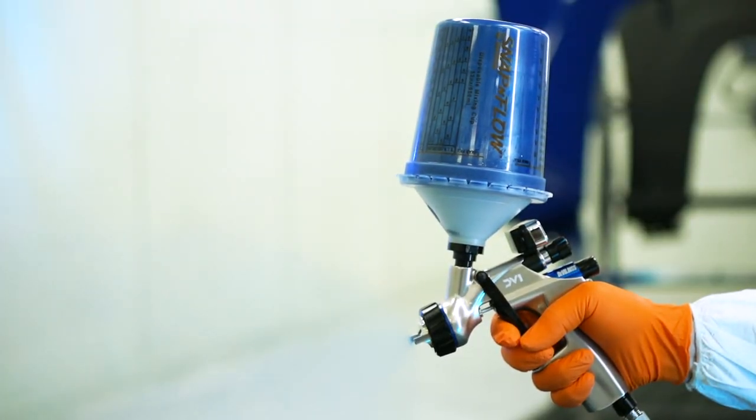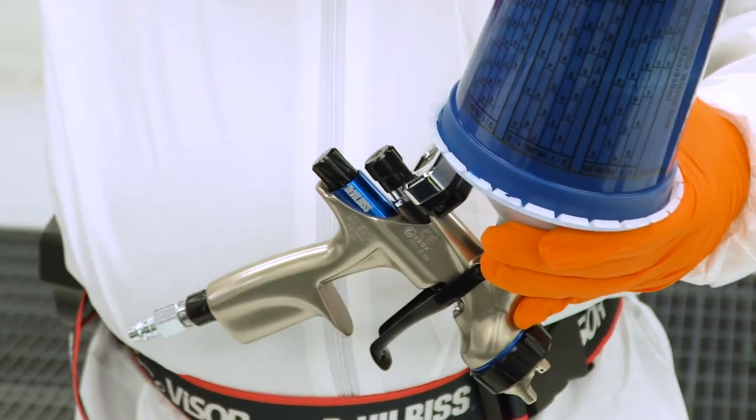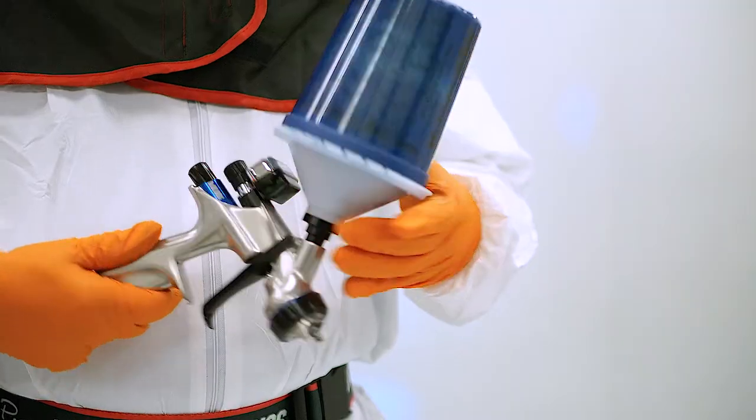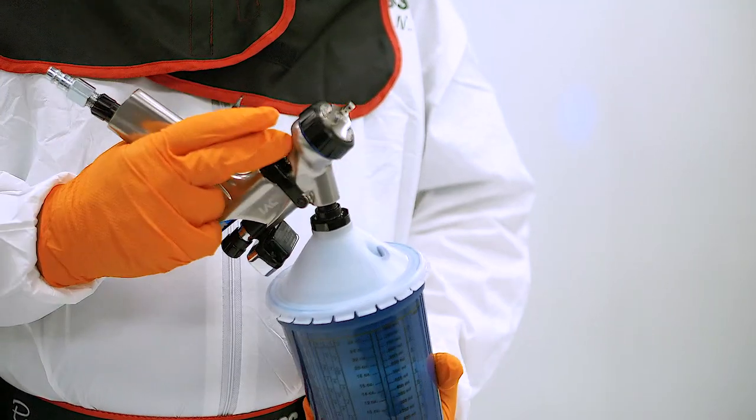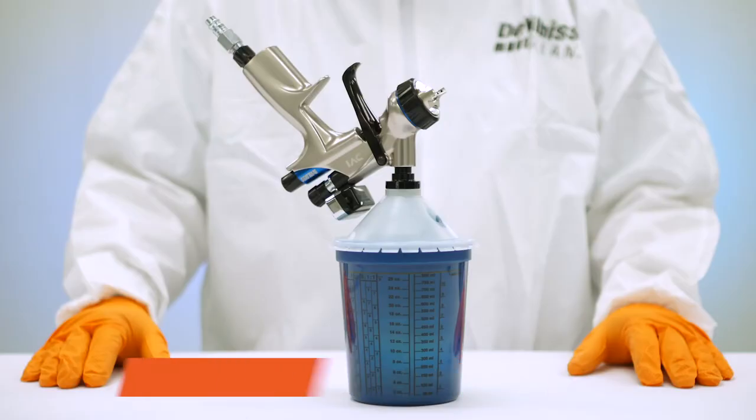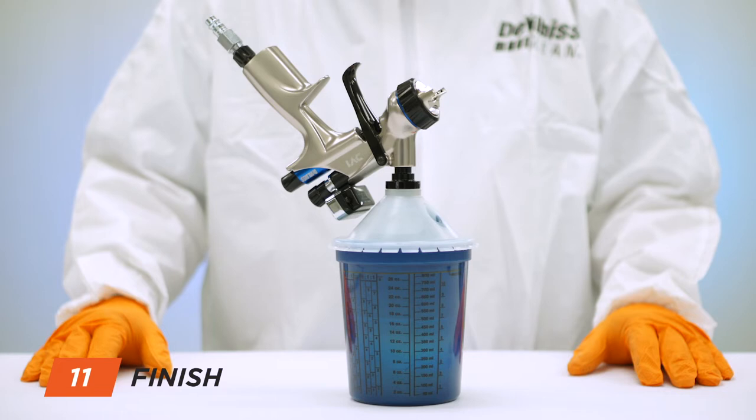When you're finished painting or when you need a refill, unhook the air hose from the spray gun. Invert the gun so the cup is pointed down. Pull the trigger to allow fluid to flow back into the cup. Go back to the mix table and set the unit down.